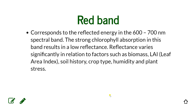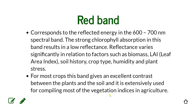The red band is very important for calculating vegetation indices. It corresponds to reflected energy in the 600–700 nanometer range, and strong chlorophyll absorption in this band results in low reflectance. It is significantly related to factors such as biomass, leaf area index, soil moisture, crop type, humidity, and plant stress. For most crops, this band gives excellent contrast between plants and soil, and is extensively used for compiling most vegetation indices in agriculture.